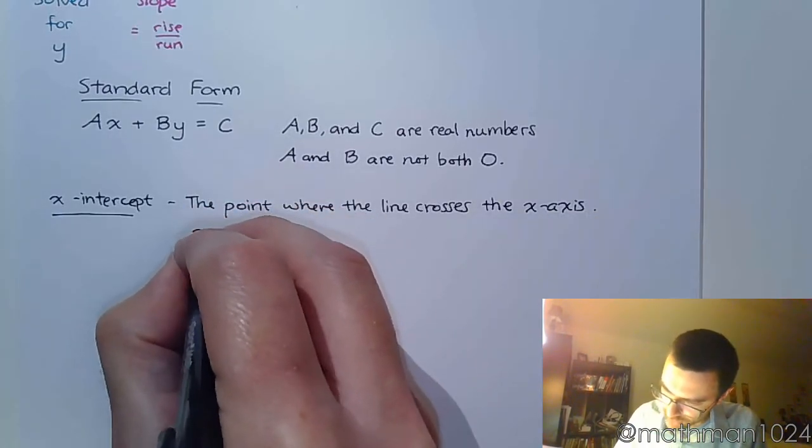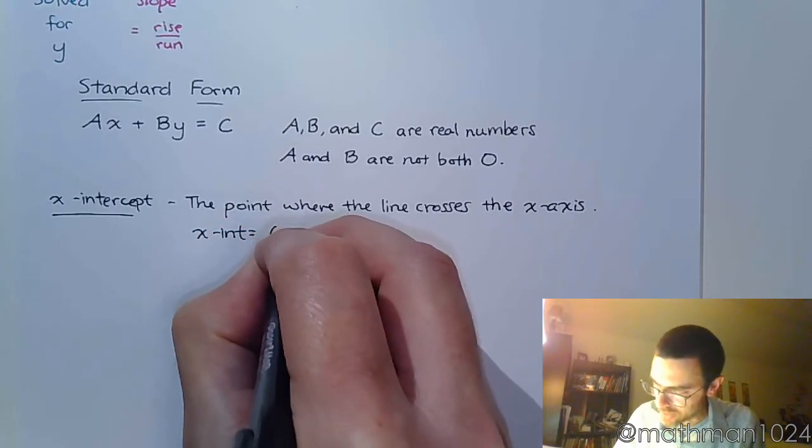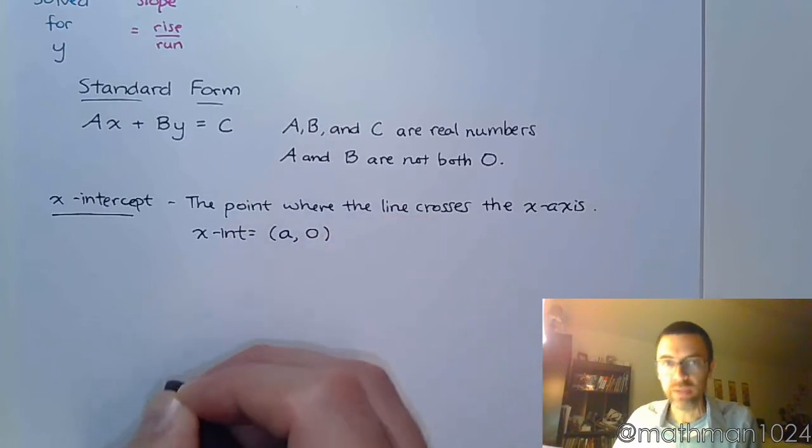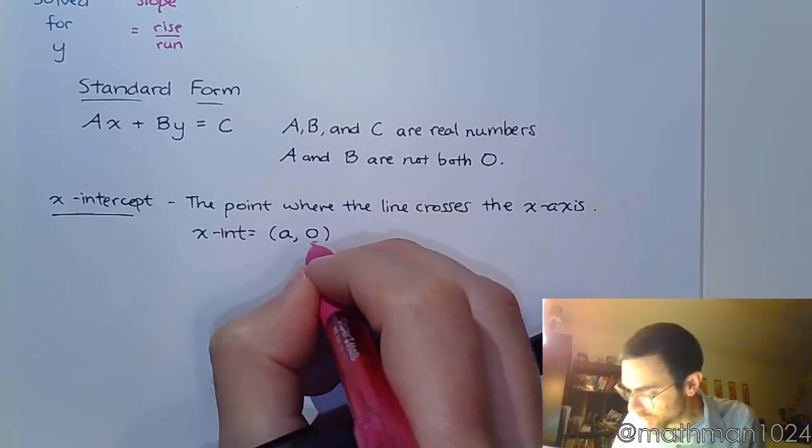The form that we see for every x-intercept is going to be the ordered pair (a, 0). So for every x-intercept, we know that the y-value is going to be 0.